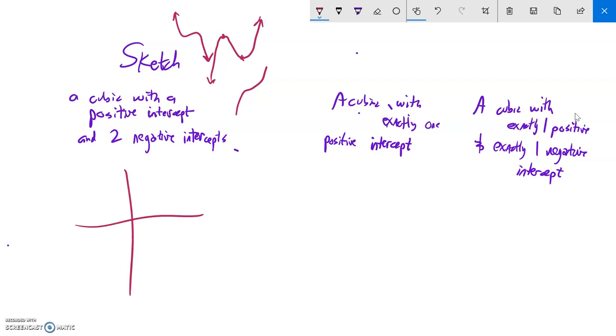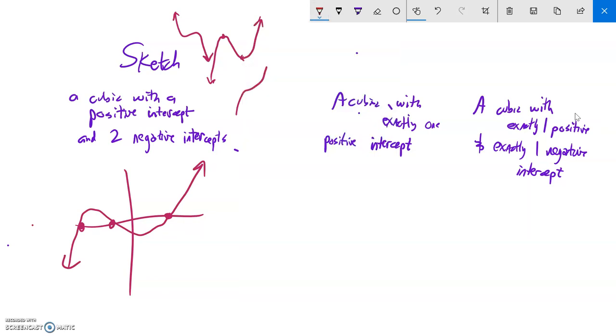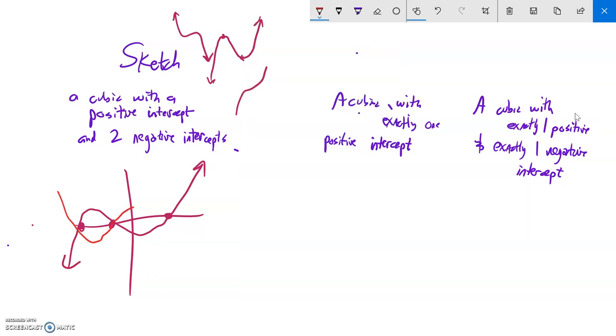A cubic with one positive intercept and two negative intercepts. As long as I make a curve that looks like a cubic that goes through these points, I'm fine. Something like that. There's an infinite number of possibilities - we could have gone like that, all kinds of possibilities.